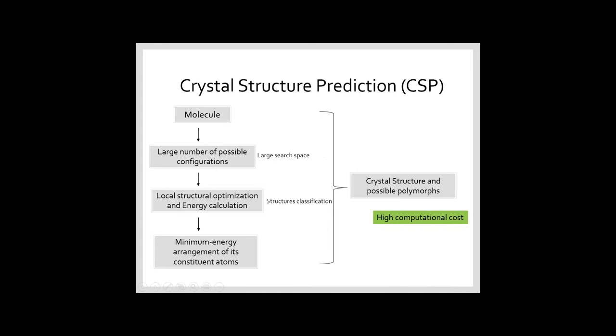The hard part of this is that even for a small molecule, we have a large number of possible configurations. For all of these possible configurations, we need to do structural optimization and energy calculation of this crystalline structure, looking for the minimum energy arrangement of the atoms of the molecule. So this procedure takes a high computational cost for us.